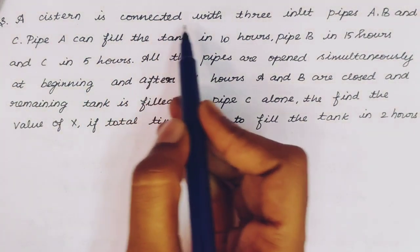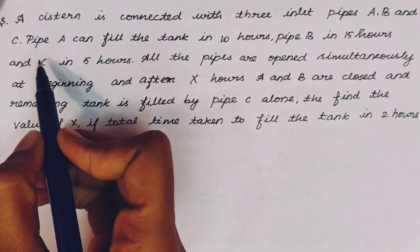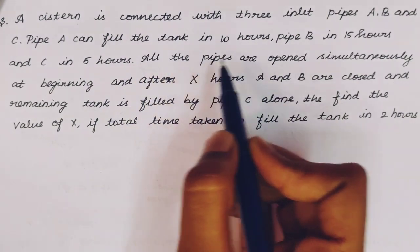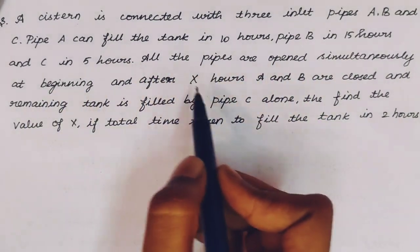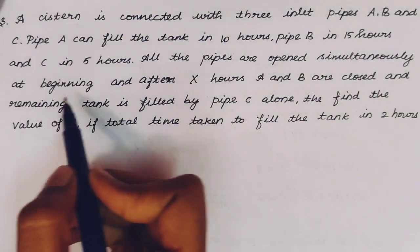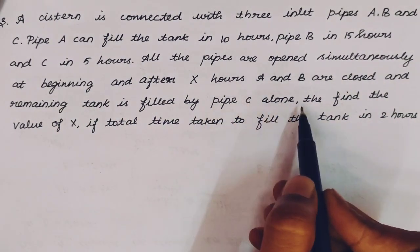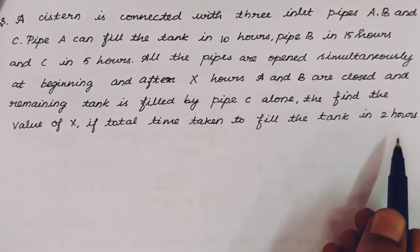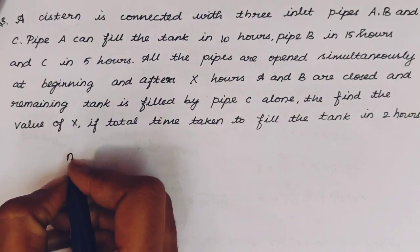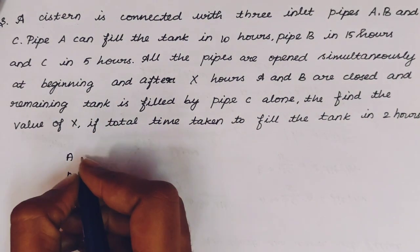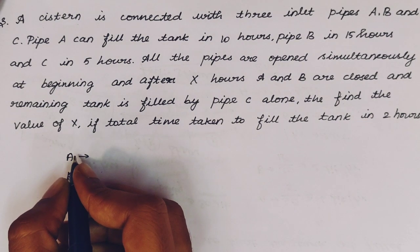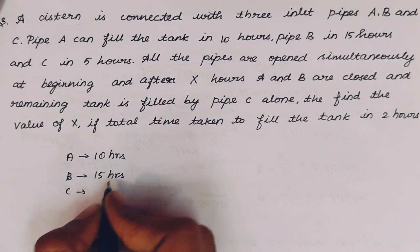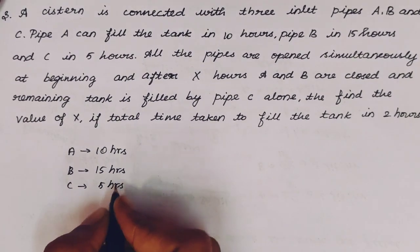A system is connected with 3 inlet pipes A, B and C. Pipe A can fill the tank in 10 hours, Pipe B in 15 hours and C in 5 hours. All the pipes are open simultaneously at the beginning, and after X hours A and B are closed and the remaining tank is filled by pipe C alone. Find the value of X if the total time taken to fill the tank is 2 hours.